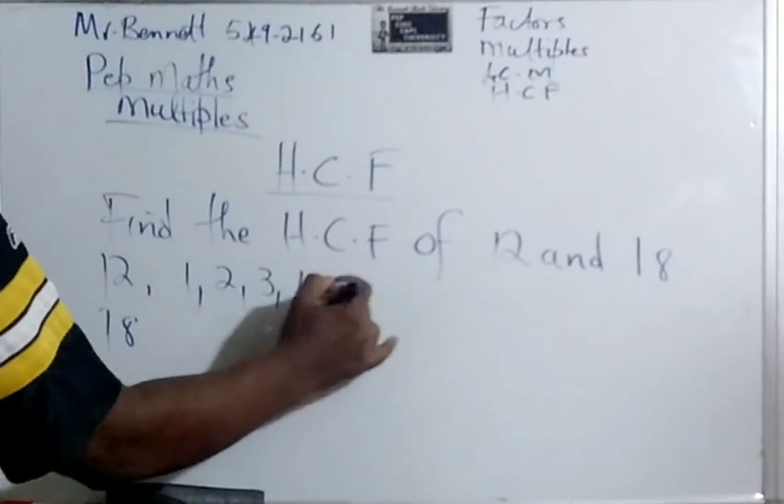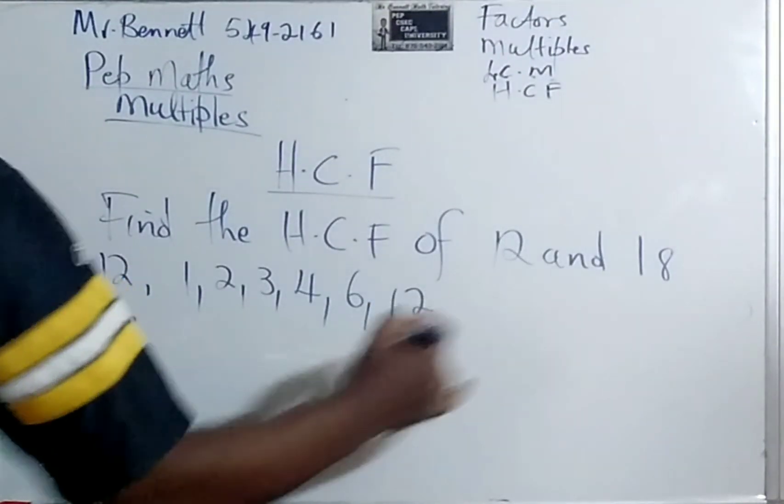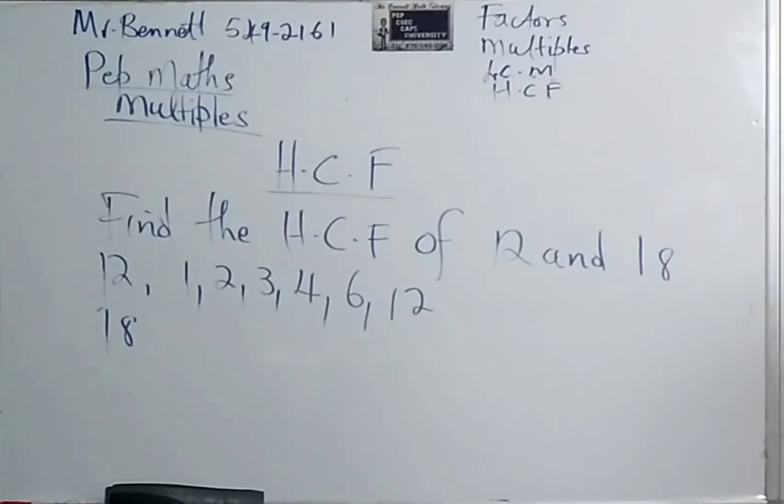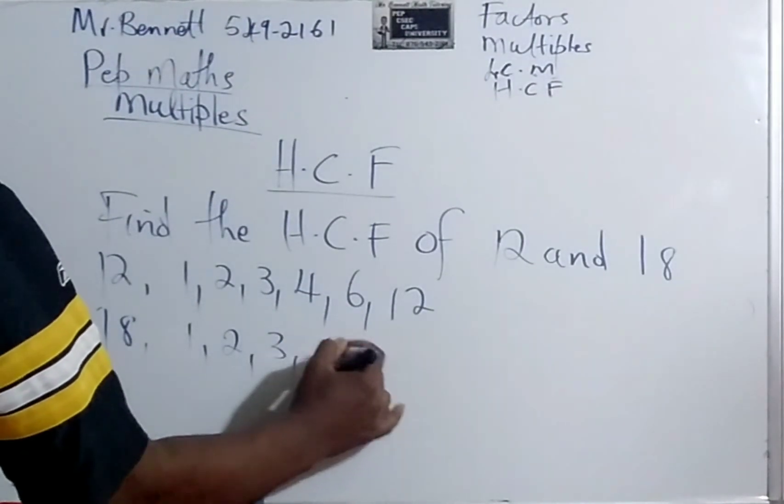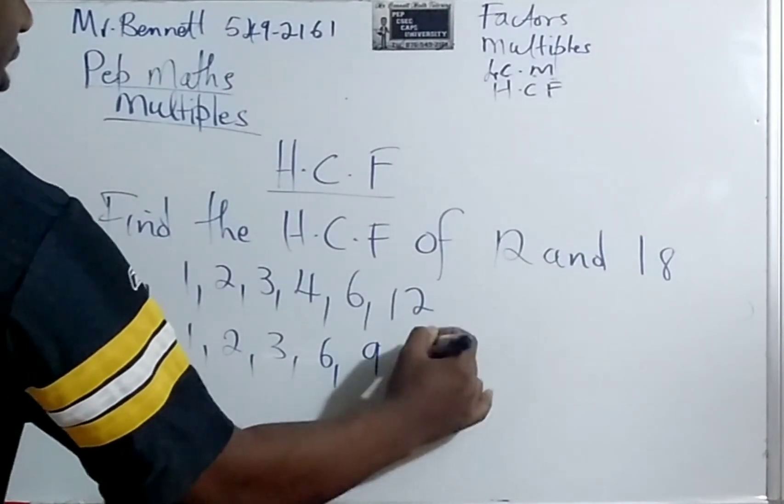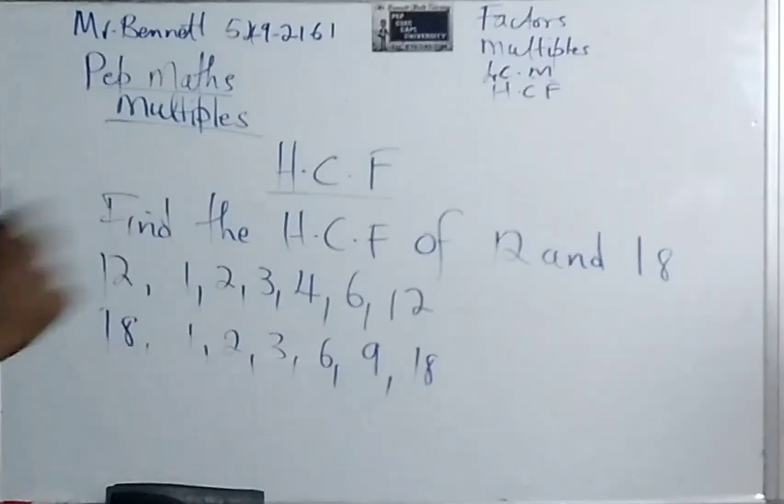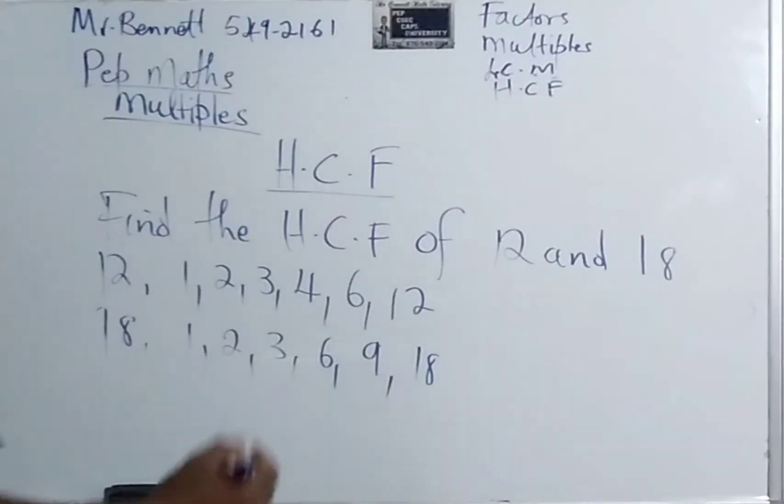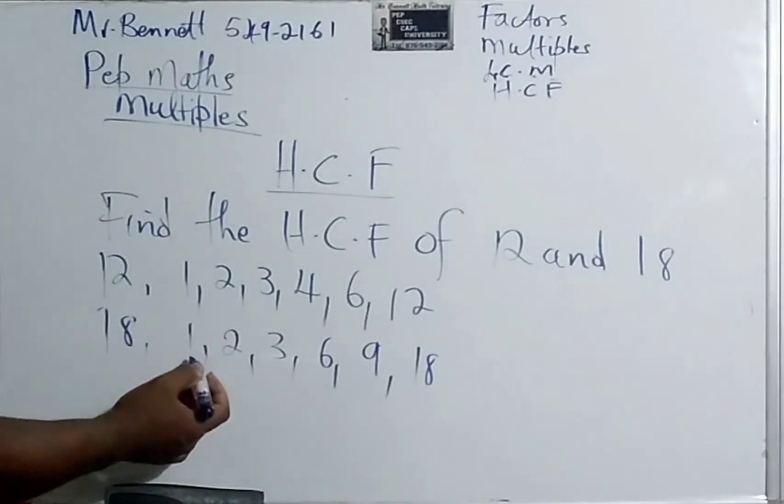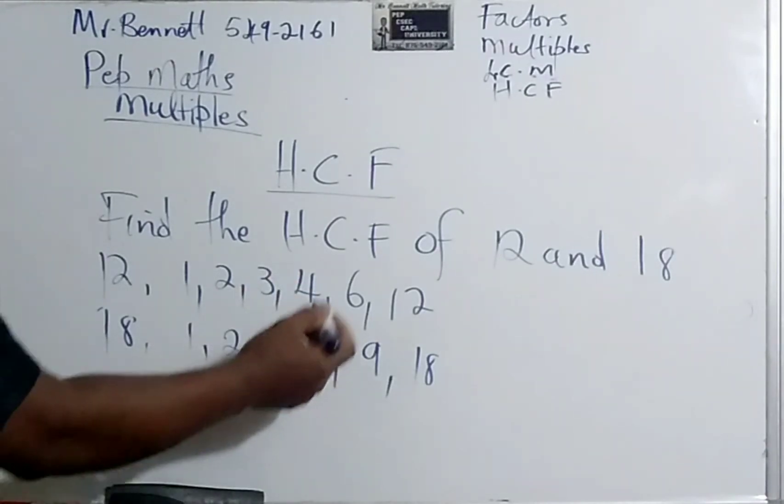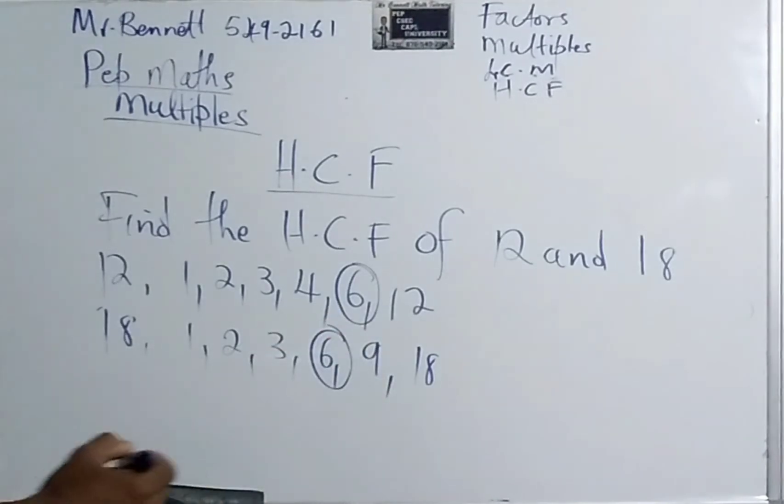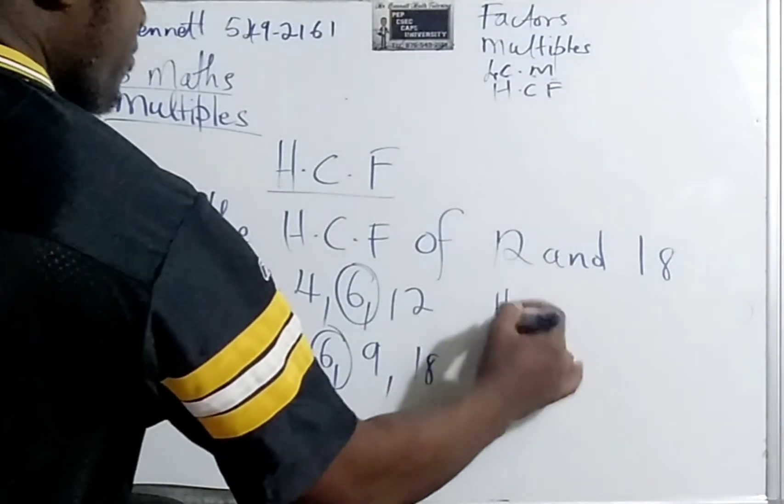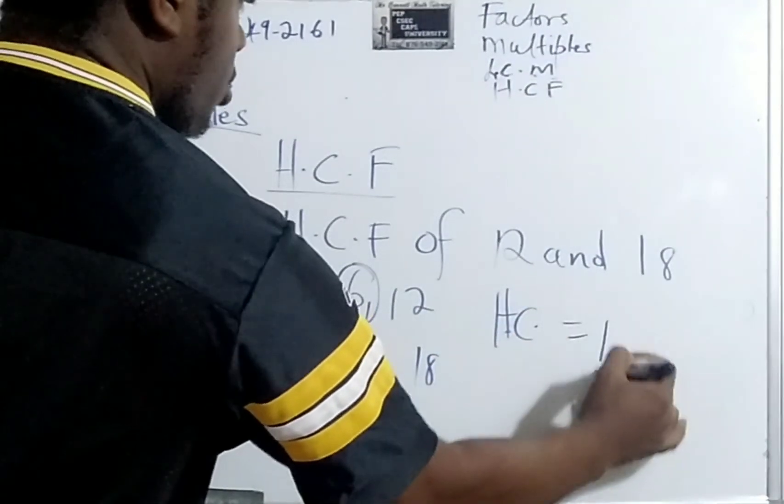So it will be 1, 2, 3, 4, 6, and 12. Now list all the factors of 18. Of course, 1, 2, 3, 6, 9, and 18. Now let us look at what is the highest number that is common to both. Is it 1? No. 2 is bigger than 1, but there are bigger. 3 is bigger. 4? No. 6 is the highest common factor. So the HCF is equal to 6.